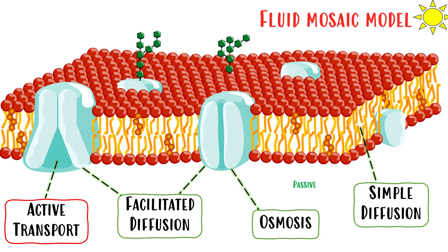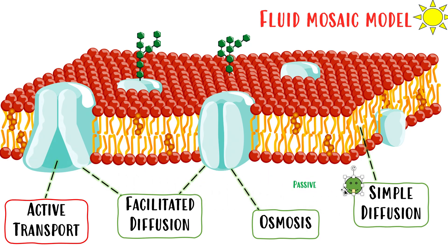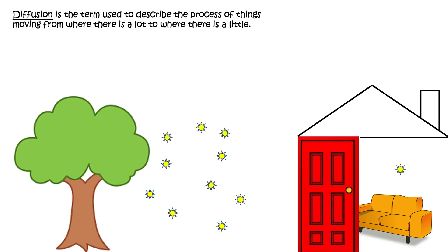Let's start with the easiest one, in my opinion, which is simple diffusion. This is a passive transport type. To understand simple diffusion, we first need to understand what diffusion is.